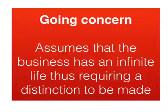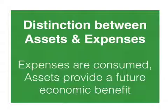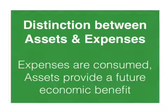The Going Concern Principle requires any business to distinguish between expenses and assets. Some students find this hard because both result in a credit entry to the bank — both are ultimately paid for. So how do we distinguish? Well, the key thing is expenses are consumed, and assets provide a future economic benefit.